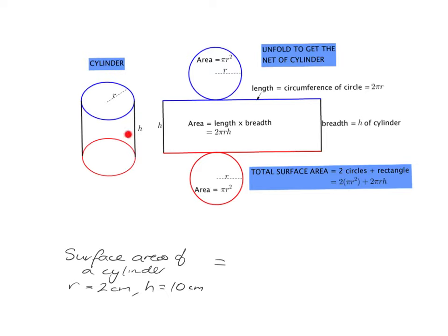If you picture your cylinder, you've got the surface going all the way around the side — that's the cardboard of the inside of the toilet roll. If you cut that cardboard and folded it flat, you are going to get a rectangle. What is the length of that rectangle? Well, that length came from unfolding the circle, so it is just the circumference of the circle. We know how to work out the circumference of a circle — it's two pi r. And what's the breadth of the rectangle?